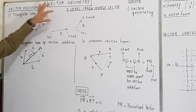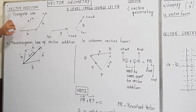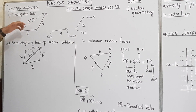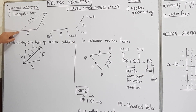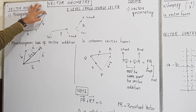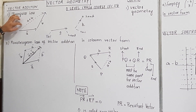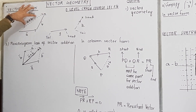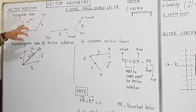You just need to put vector b at the ending point of vector a, keeping the same direction. After joining them — this is the head-to-tail rule — you join the tail of a with the head of b, meaning the tail of the first vector with the head of the last vector. This gives you the resultant vector, which is a plus b. This is the triangular law of vector addition, also called the head-to-tail rule.